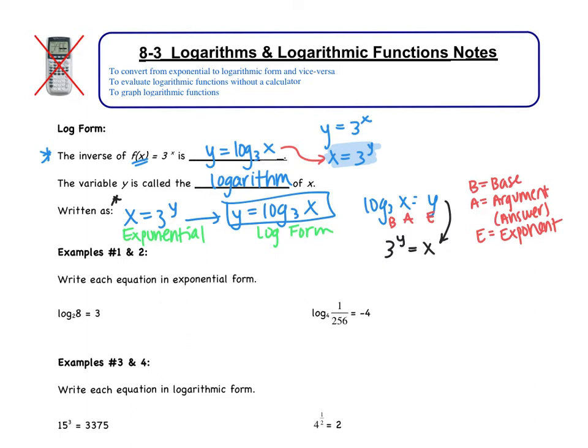Example number one, it says, write each equation in exponential form. Okay, so we're going to write down that acronym. Remember, I have the base, the argument, and the exponent. My base is 2, my exponent is 3, and then my argument, or my answer, is 8. So these two, what we have right here, and what we have right here, are the same equation, just different forms. Looking at the next one, we have base, argument, exponent. So my base is 4, my exponent is -4, and my answer, or my argument, is 1 over 256. So this is my answer. Again, I just took the equation and wrote it in a different form.